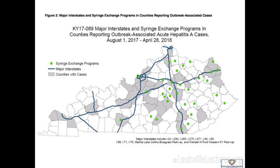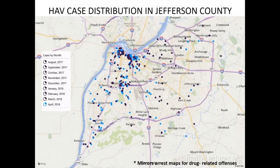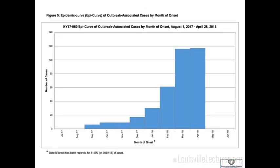A map shows the syringe exchange programs as green dots, major interstates as blue lines, and counties with cases in gray — you can see the clusters of cases align closely with the interstates and exchange programs. Another map, provided by Dr. Koloi, shows all cases mirroring arrest maps for drug-related offenses — very telling as to the source. The outbreak was officially declared in November and is ongoing, with case counts still rising in March and April.